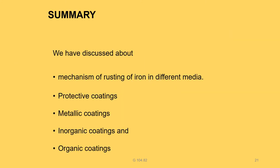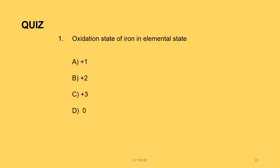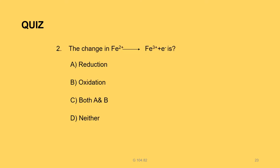Summary: we discussed the mechanism of rusting of iron and three types of protective coatings — metallic coatings, inorganic coatings, and organic coatings. The oxidation state of iron in its elemental state is zero.